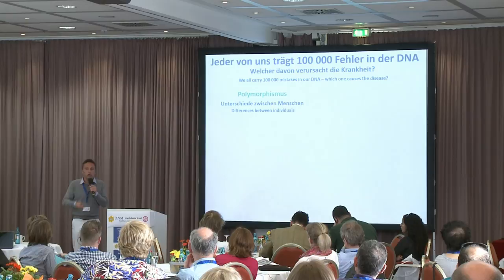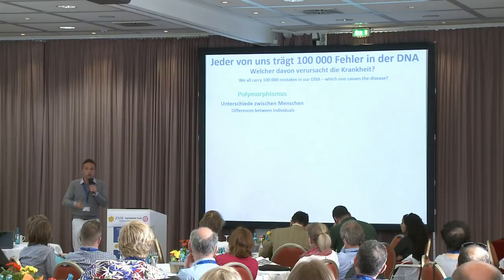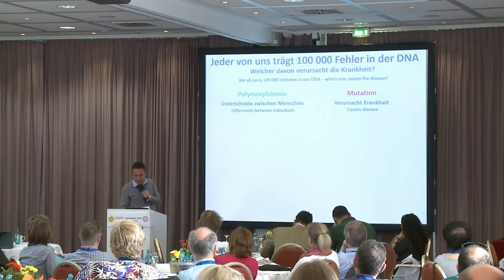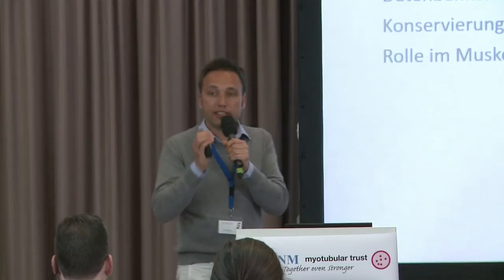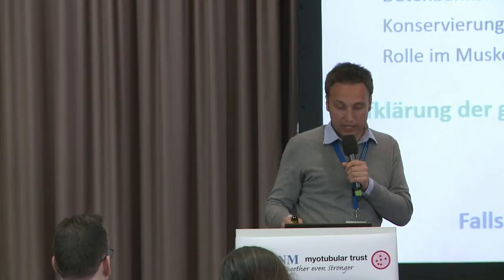Only then did we understand that every one of us has many faults in our DNA — around 100,000. But those mutations are not responsible for illness; mostly they are just polymorphisms — my nose is a bit big, my ears are long — just the changes between us. But among these 100,000 variants, there can be just one mutation that causes the disease, and this is the key mutation that we have to find.